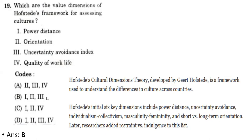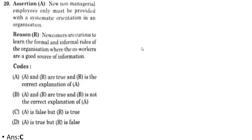Twentieth question — assertion and reasoning: only non-managerial employees must be provided with systematic orientation in an organization. The reason is newcomers are curious to learn the formal and informal rules of the organization, and co-workers are a good source of information. The correct option is C — A is false but R is true.